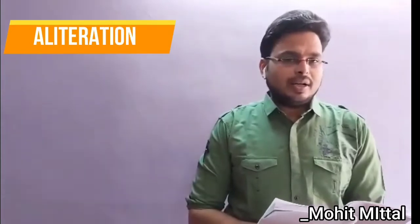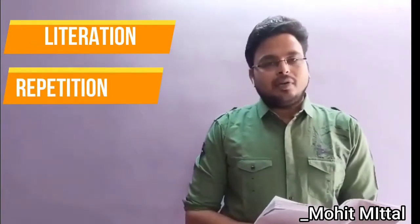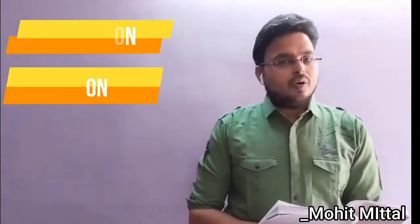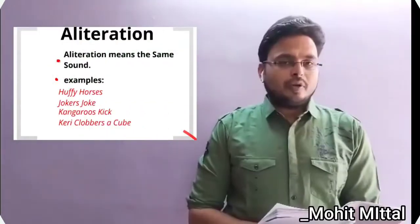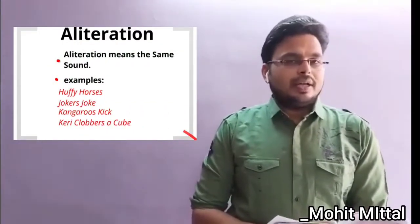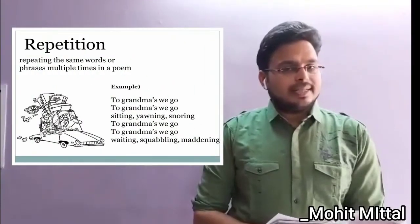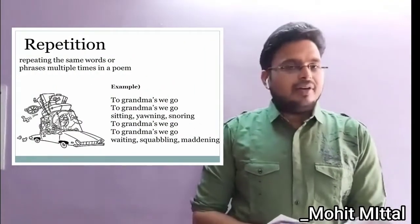Basically two literary devices are used here. One is alliteration and the other is repetition. Alliteration is about the repetition of consonant sounds, and repetition is the repetition of the words themselves. When we encounter the literary or poetic device in the poem, I will describe it there further.